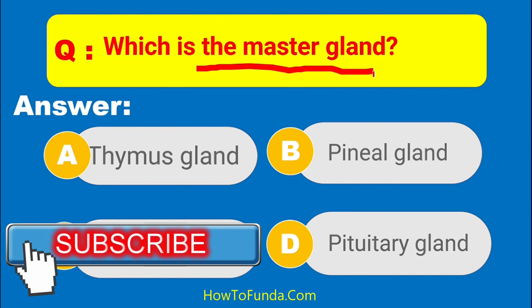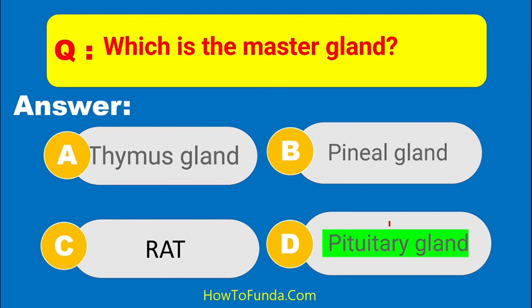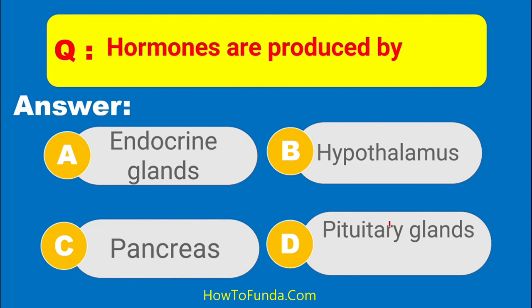Which is the master gland? The answer is the pituitary gland — the pituitary gland is the master gland in the human body. Which produces hormones in the human body — is it endocrine glands, hypothalamus, pancreas, or pituitary gland?